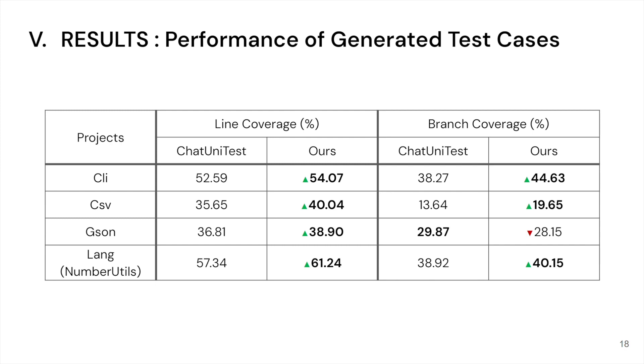generally we can see an increase in the performance of our generated test cases compared to the ChatUnitTest baseline, with the only exception in Gson project where we only achieved 28.15 branch coverage compared to 29.787 branch coverage of the baseline.